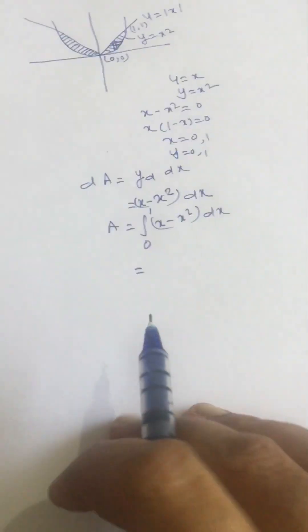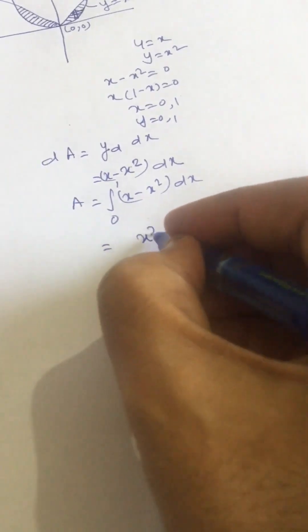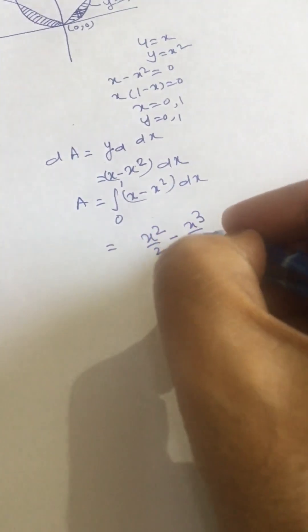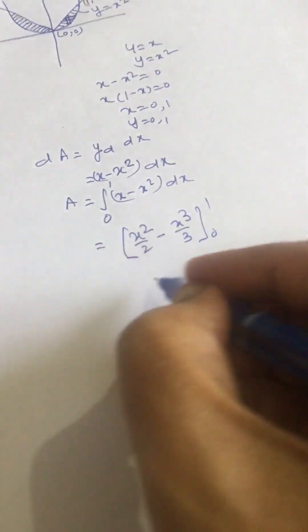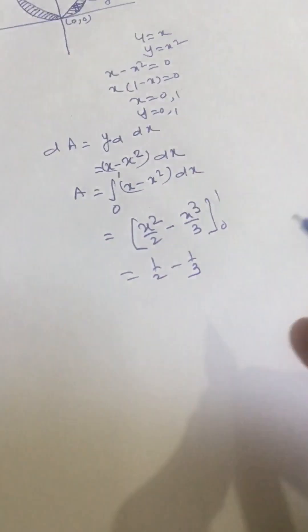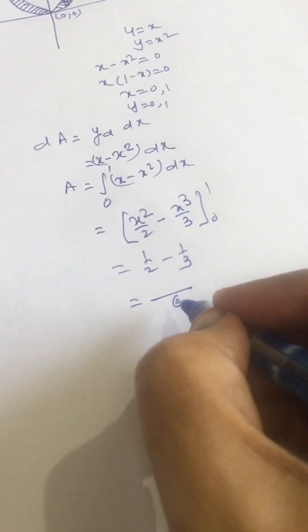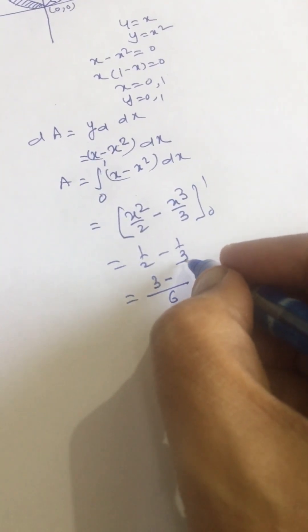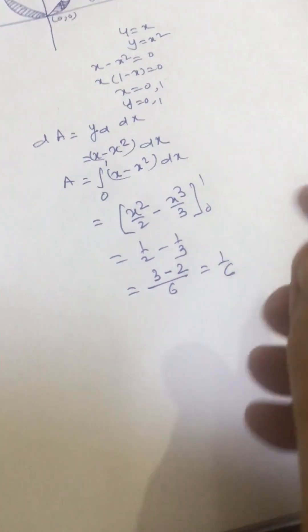We can evaluate like this: the integral gives x squared over 2 minus x cubed over 3, with limits 0 to 1. So this is 1 over 2 minus 1 over 3, which equals 3 minus 2 over 6, equal to 1 over 6. So this is the area for one side.